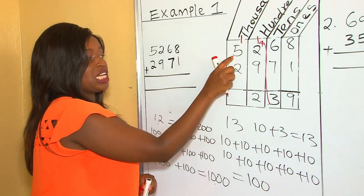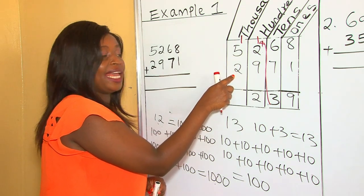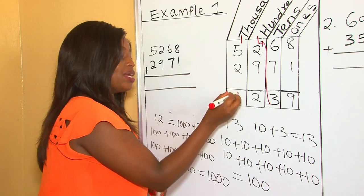So 1000 plus 5000, that is 6000, plus 2000, that is 8000. So we write our 8 here.